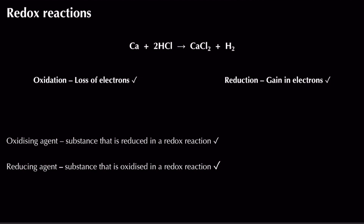In this video we're going to be looking at redox reactions — how we can determine what substance is being oxidised and what substance is being reduced. Oxidation and reduction are two key definitions: oxidation is the loss of electrons, where the oxidation state becomes more positive, and reduction is the gain of electrons, where the oxidation state becomes more negative.